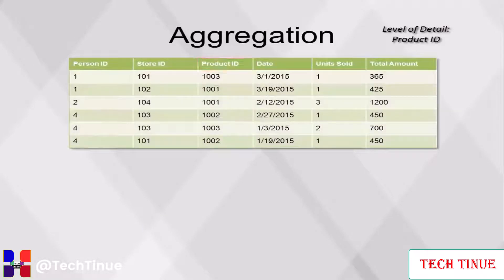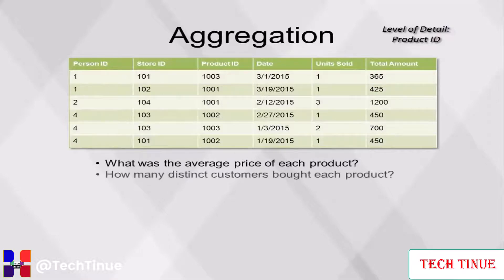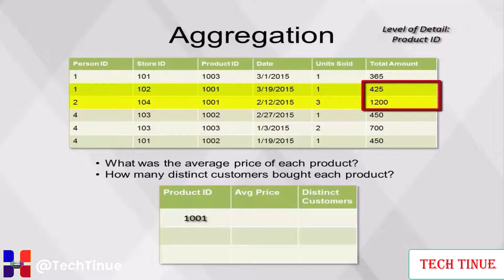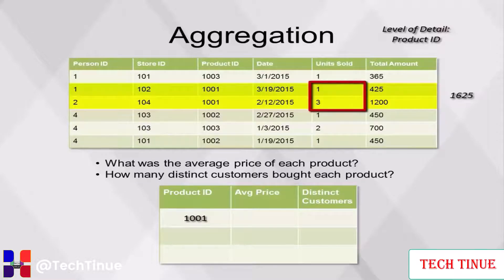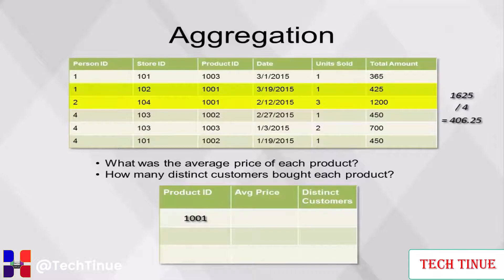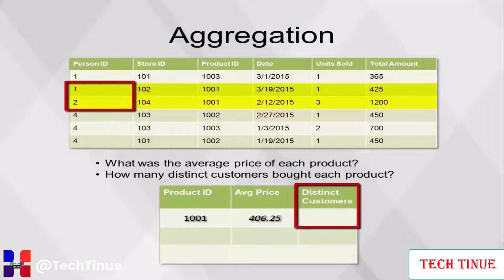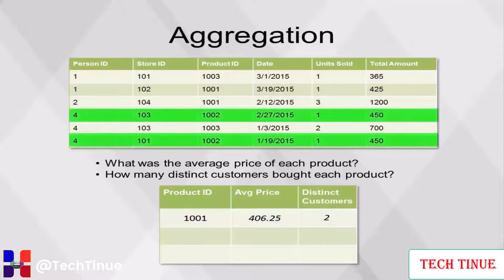Aggregating at the product level of detail can answer basic questions about each product, such as what was the average price of each product, and how many distinct customers bought each product? Starting with product ID 1001, average price is calculated as the sum of the total amount (1625) divided by the sum of units sold (4), resulting in 406.25 populated into the resulting table. Be aware that using an average function in this case would not give the expected result. Distinct customers is calculated by counting the distinct number of person IDs for product ID 1001 — there are two: person ID 1 and person ID 2.